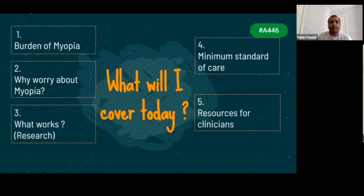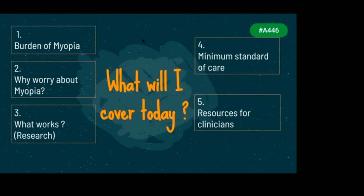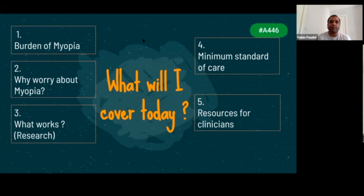Today I'm going to cover a brief overview of the burden of myopia — how severe is the problem and why do we need to worry about myopia? We know over 50% of the world's population is going to be myopic. I'll also touch on what works, the evidence-based research, and provide a minimum standard of care based on the knowledge we have. I'll also give a couple of resources for clinicians looking for myopia resources on the internet.